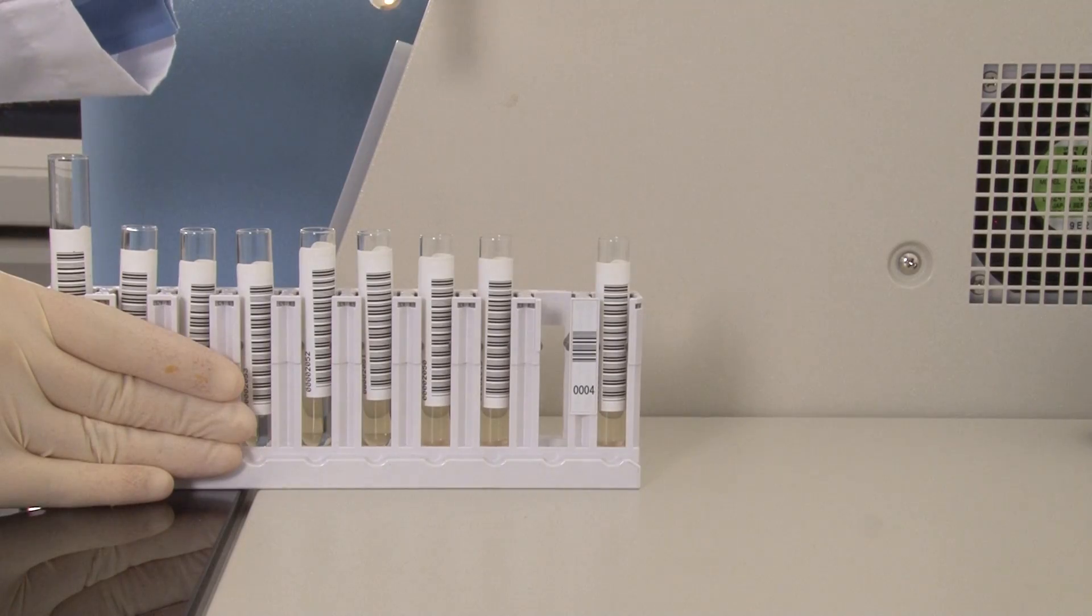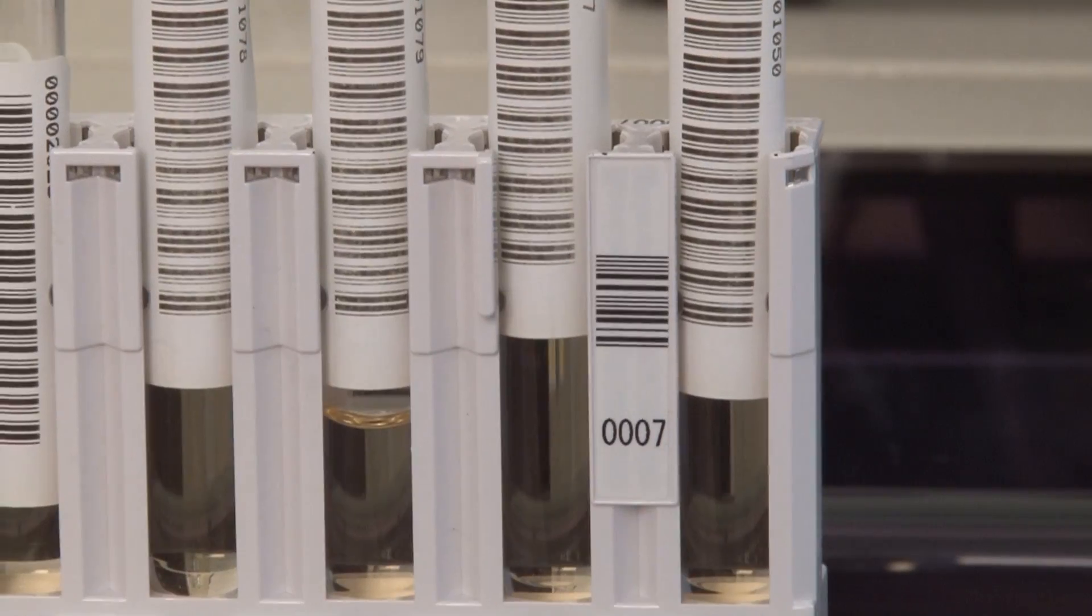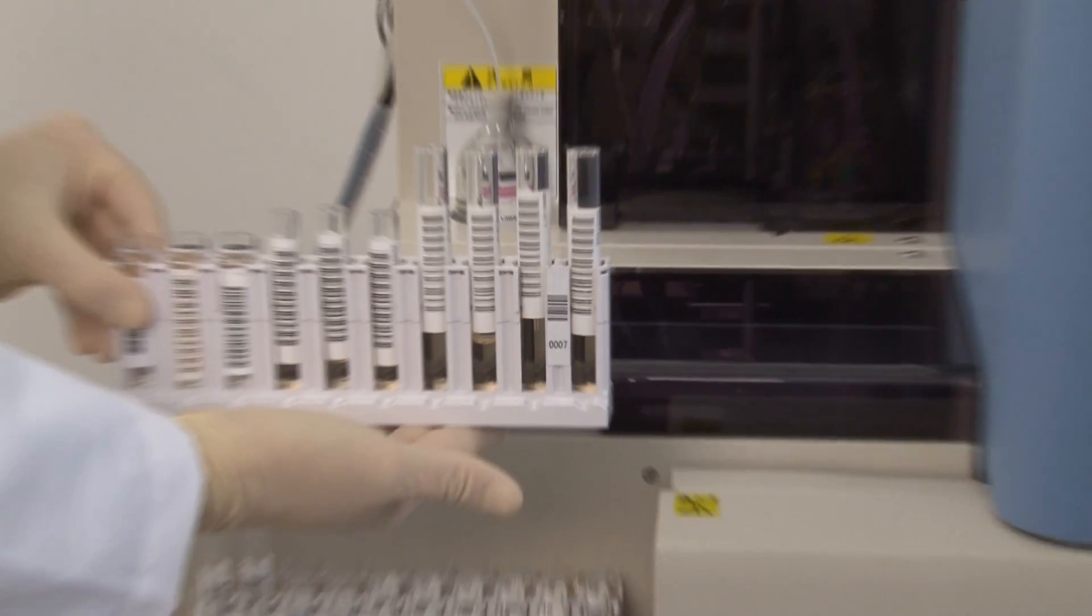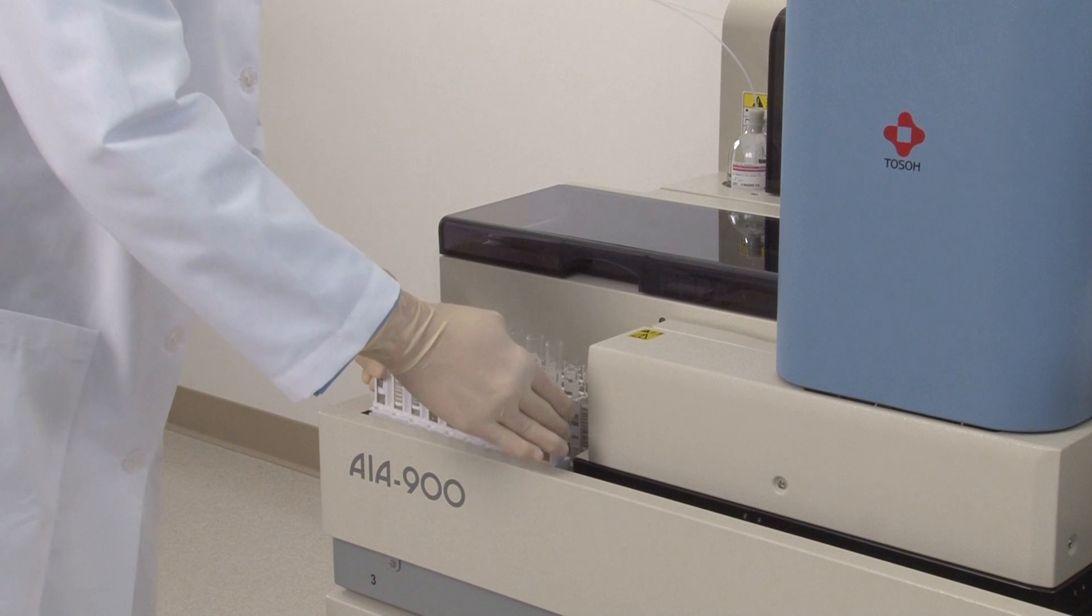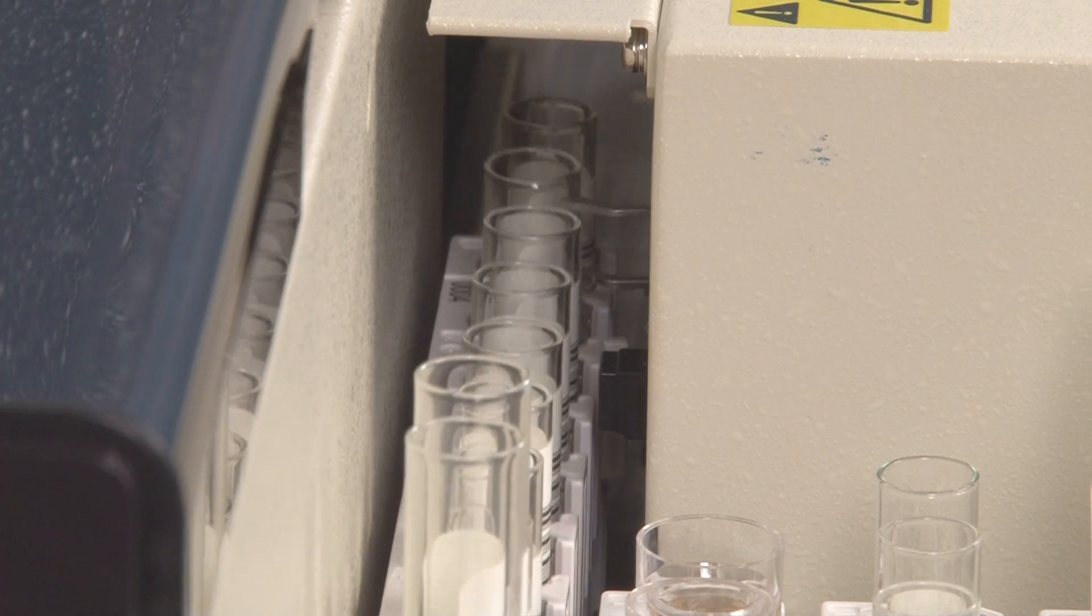To begin testing, the operator simply places barcoded primary sample tubes or sample cups into the barcoded sample racks. If the system is interfaced, the barcoded racks and tubes are read and the requested assays are performed.